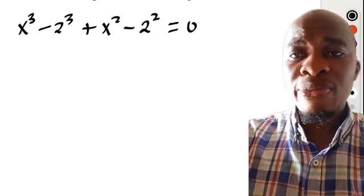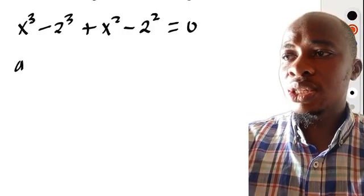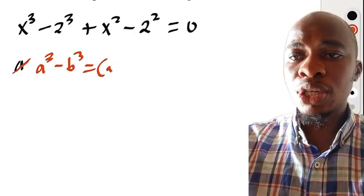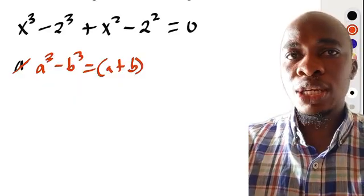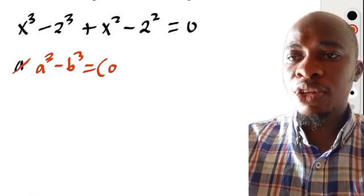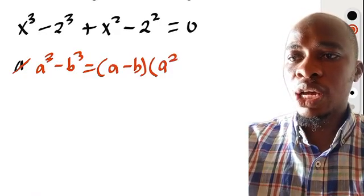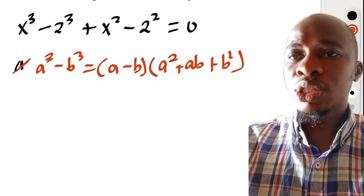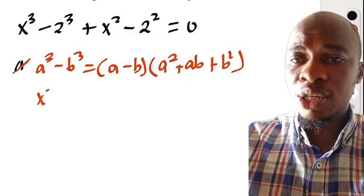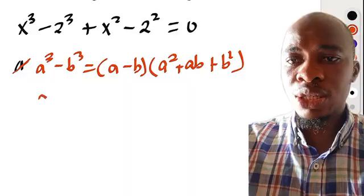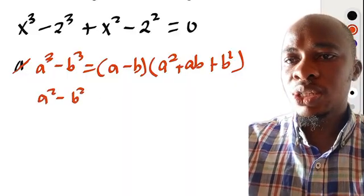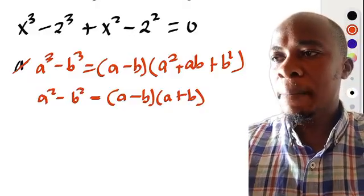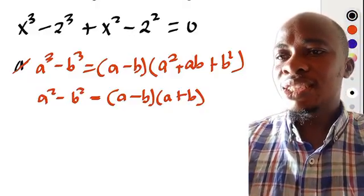The next thing we're going to do is recall that if you have a to the power of 3 minus b to the power of 3, this is going to be a minus b into x squared plus ab plus b squared. Also if you have a squared minus b squared, this is going to be a minus b times a plus b — that is the difference of two squares.